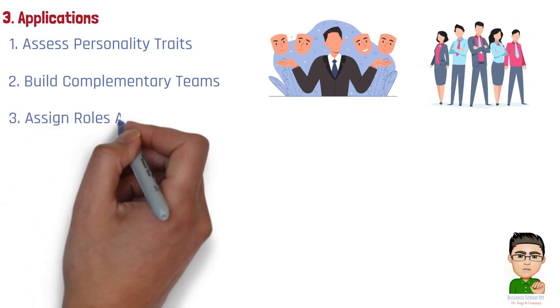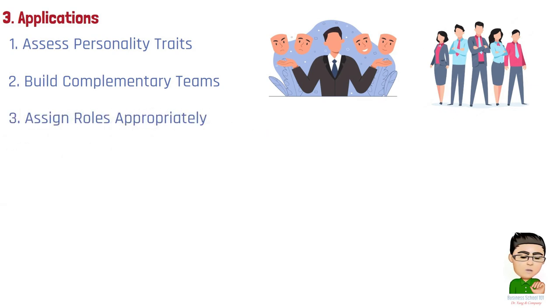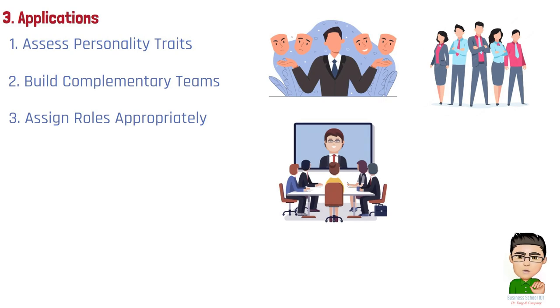Number 3. Assign roles appropriately. Align individual strengths and personalities with specific roles and responsibilities within the team. A highly conscientious team member might be well-suited for tasks requiring precision and attention to detail, while an extroverted team member could excel in client-facing or collaborative roles.